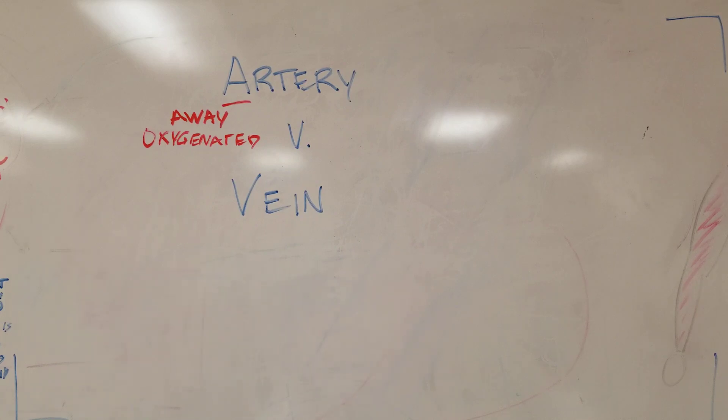In any case, some quick ways at bedside to know whether you're in one or the other. Let's say you stick a radial arterial line in and you want to know, is this in the radial artery or radial vein? First thing you can do is draw an ABG and see what your values are.